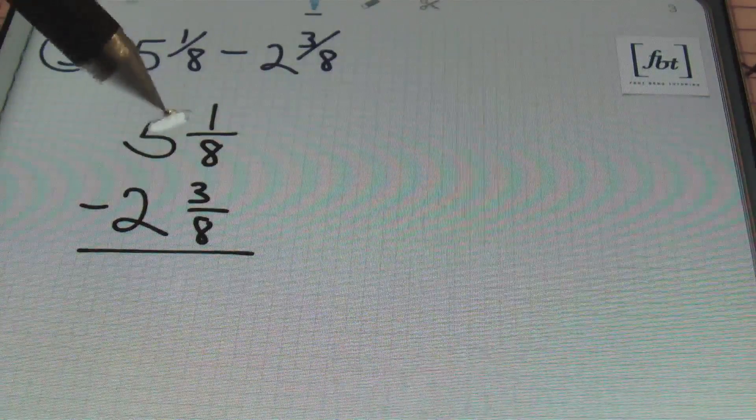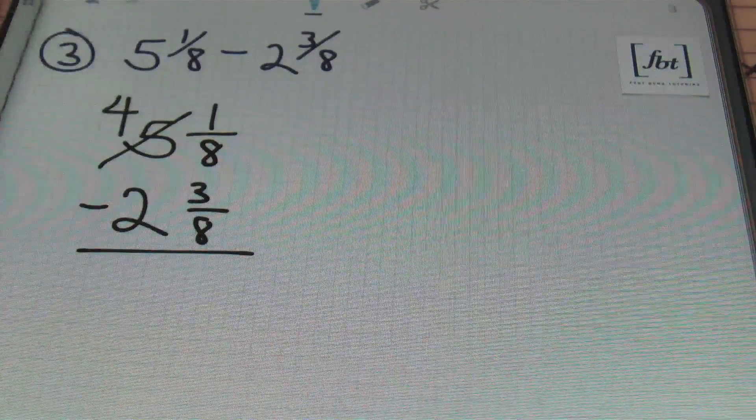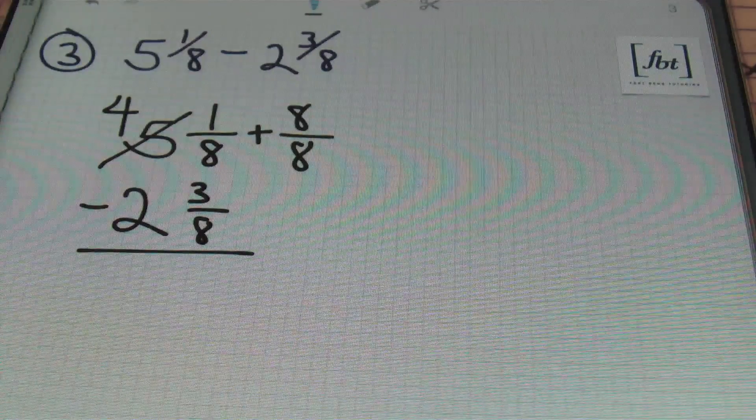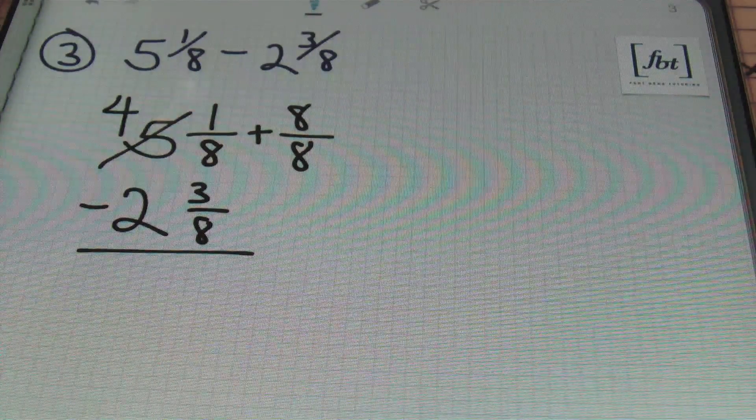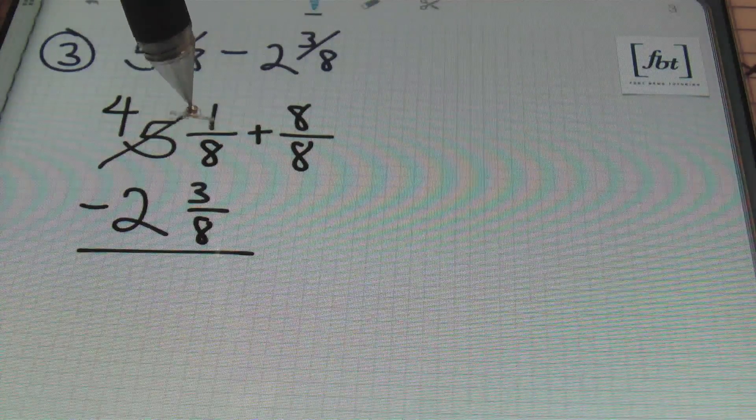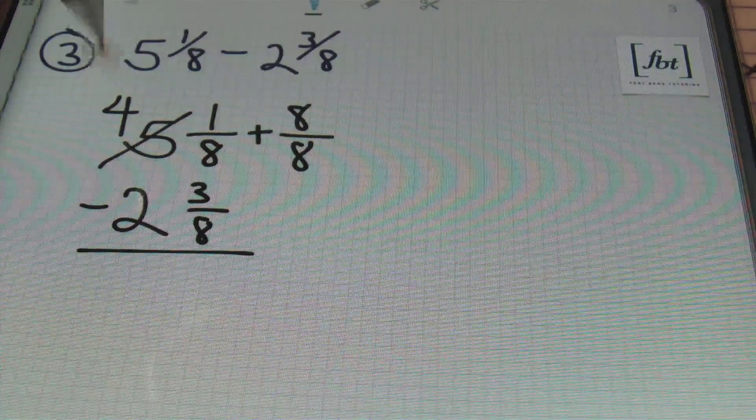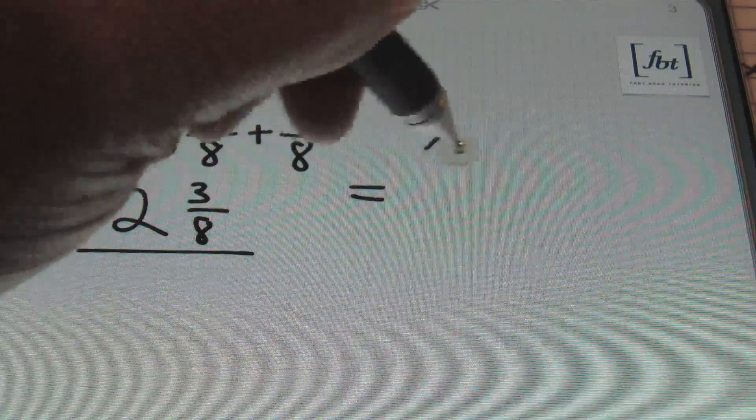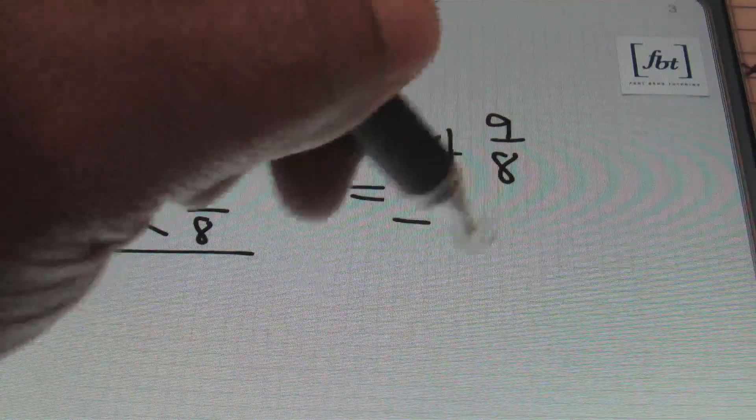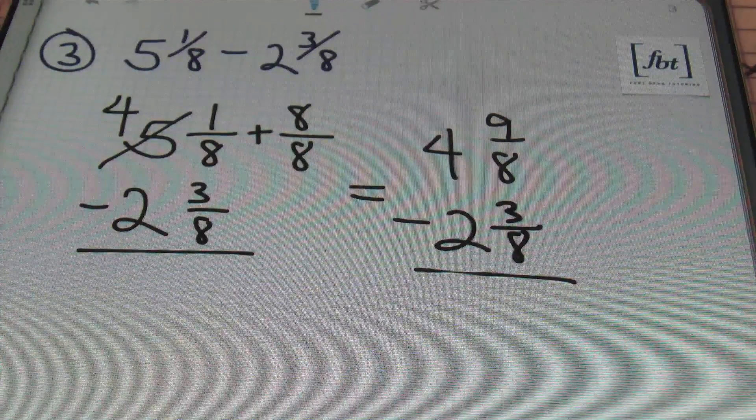But we can't subtract the 3 from the 1, so that means we'll need to borrow. And so I'll borrow 1 from the 5 and make that now a 4. And the 1 will be in the form of the denominator over itself. So remember, we already had a common denominator of 8. If you're going to borrow any time with a mixed number, you always borrow using the denominator, that common denominator over itself. So remember, 8 over 8 is just 1, right? So that's the 1 that I borrowed from the 5. You can rewrite this as 4, and now adding the numerators together, 1 plus 8 gives me 9 eighths minus 2 and 3 eighths, just like so. Now we can finally subtract these two values.